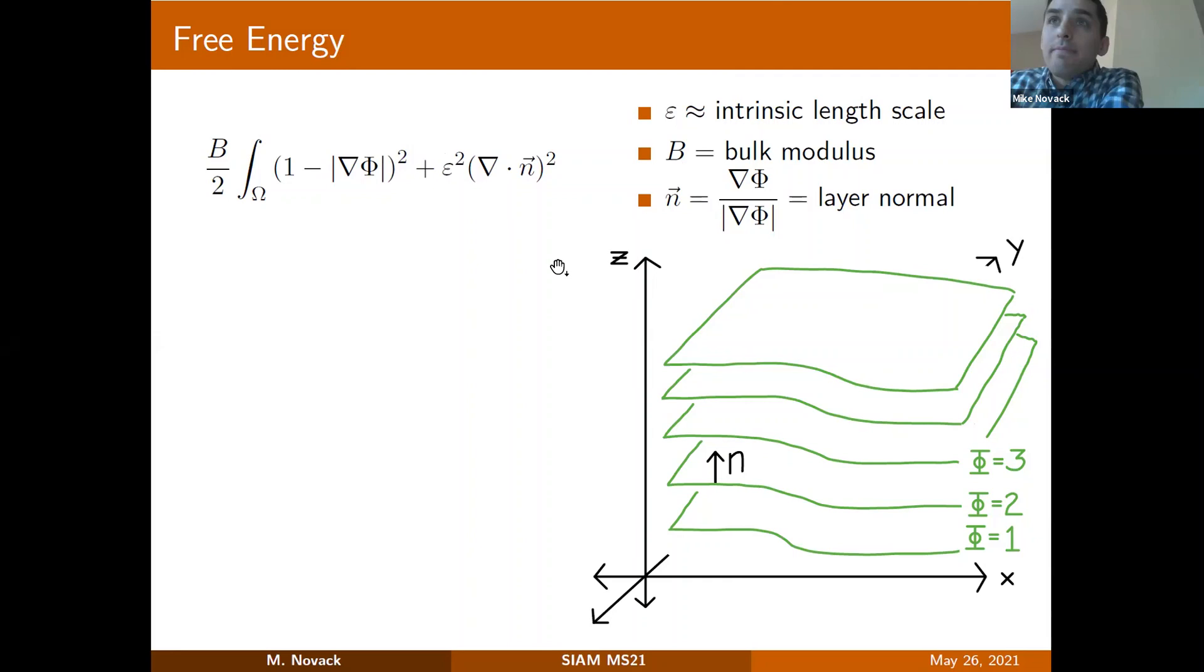It enforces that the layers have equal spacing due to the penalization of gradient phi taking values away from one in modulus. That enforces equally spaced layers. The constant B determines how much that's penalized. The second term in the energy, the divergence of N where N is the layer normal, is called the bending energy. It penalizes layers that have mean curvature, since we recognize that this divergence of N is nothing but the mean curvature of each layer.